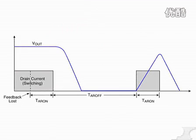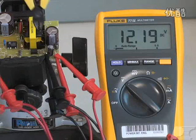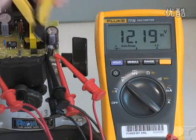If for any reason the power integrations device does not receive feedback for longer than the auto restart on time, the device will enter auto restart protection mode. This will always happen when the feedback loop is open.